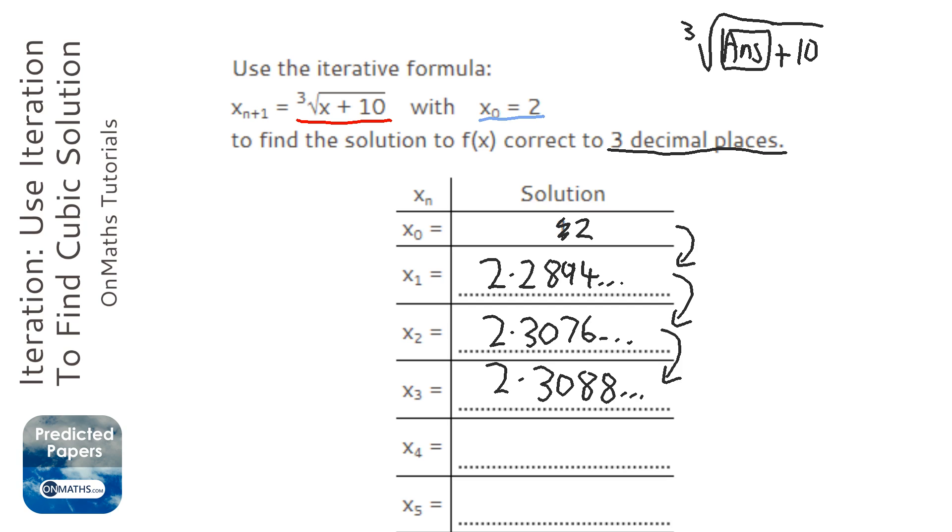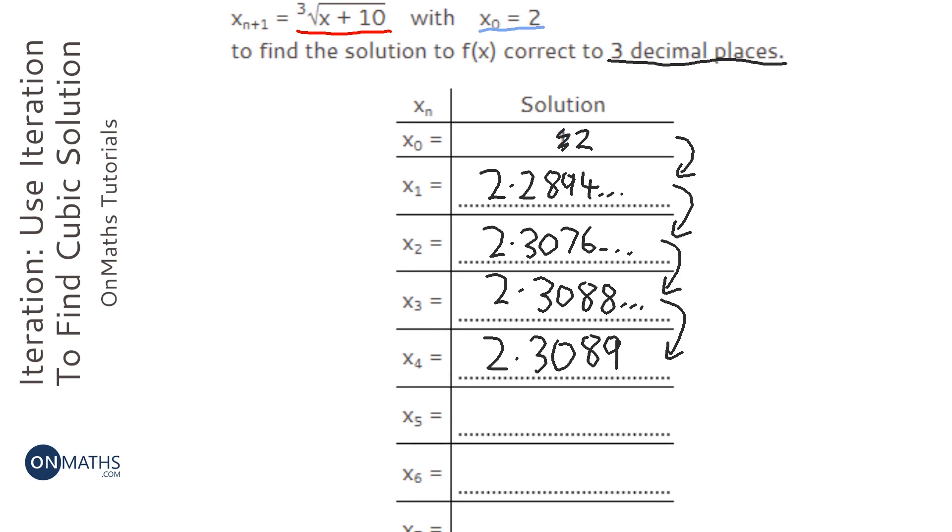I'm going to put in as many decimal places as I can. You can see that it's getting closer and closer to something. Because we're doing three decimal places, I've just got to make sure I've got all three decimal places down. But you can see it's already repeated here. Both of these are 2.309.